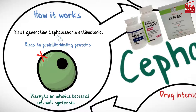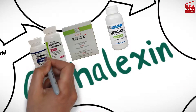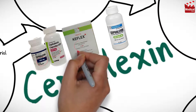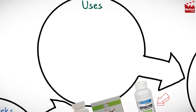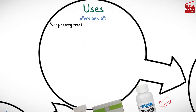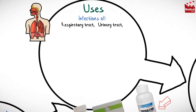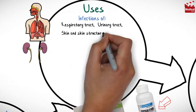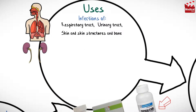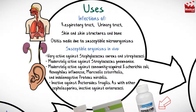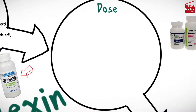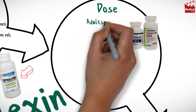It is available as 250, 500, and 1000 milligram tablets and also available as oral suspension. Cephalexin is used in the treatment of infections of the respiratory tract and urinary tract, skin and skin structures, and bone infections, as well as in the treatment of otitis media due to susceptible strains of specific microorganisms.